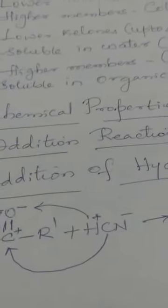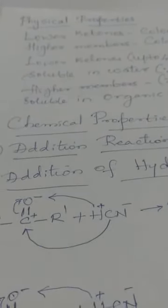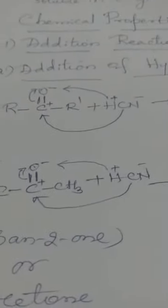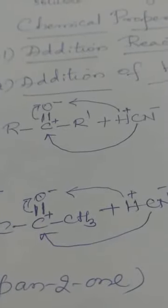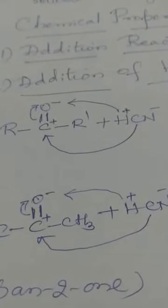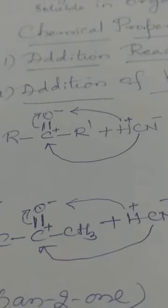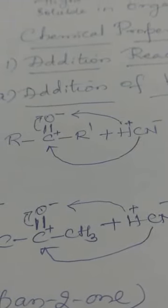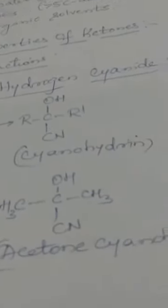Coming to the chemical properties of ketones, the same set of reactions discussed for aldehydes are answered here by ketones. The first set is addition reactions — in particular, addition of hydrogen cyanide (HCN). The general ketone R-C=O-R' reacts with HCN, which splits as H+ and CN−. The carbonyl group, being polar, forms C+ and O−. H+ is picked up by O− to form OH, and CN− forms a bond with carbon. Products having a hydroxyl group (OH) and a cyano group (CN) bonded to the same carbon atom are called cyanohydrins, with formula R-C(OH)(CN)-R'.